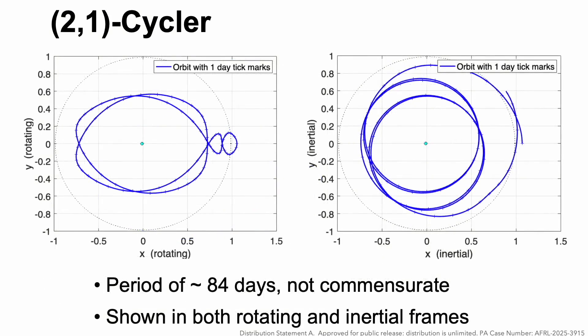Here's a (2,1) cycler. It has a period of about 84 days, so it's not commensurate with Earth-Moon-Sun geometry. We're showing it in both the rotating and inertial frames.